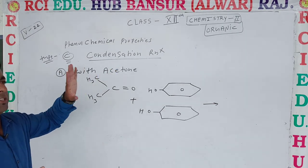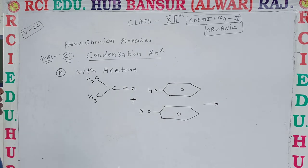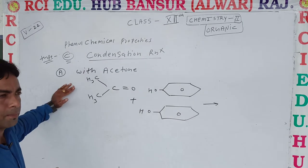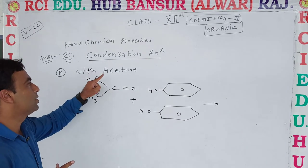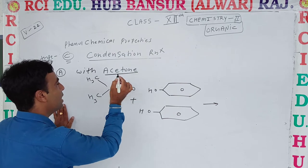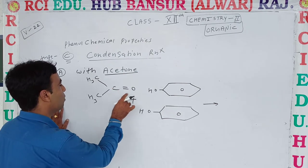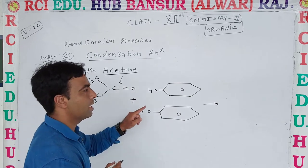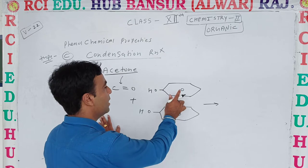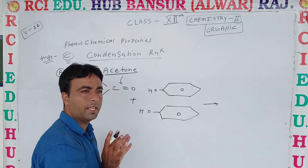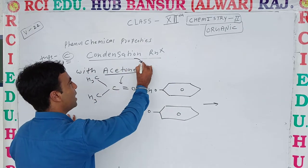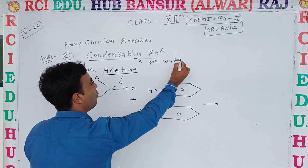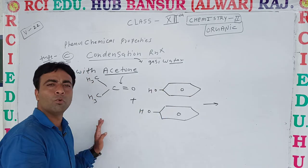The condensation reaction — which one is it? Condensation reaction with acetone. In this section we are going to study four to five reactions. The first reaction is with acetone. In this reaction with acetone, students, acetone has a CH3-C double bond structure. We are using two moles of phenol here — one phenol and a second phenol. Condensation means some gas comes out or water molecules are released.